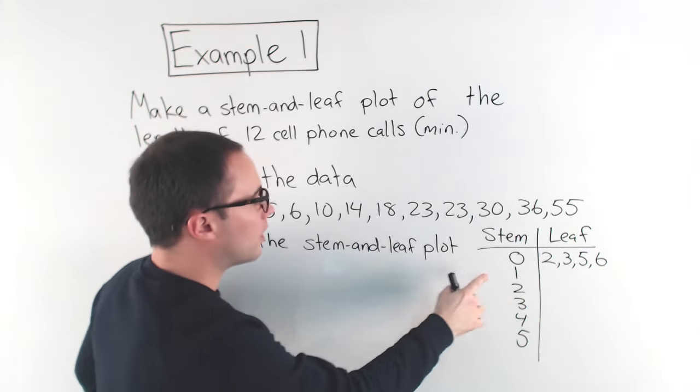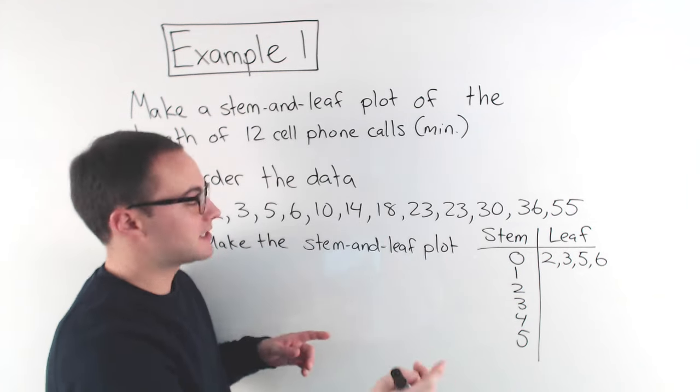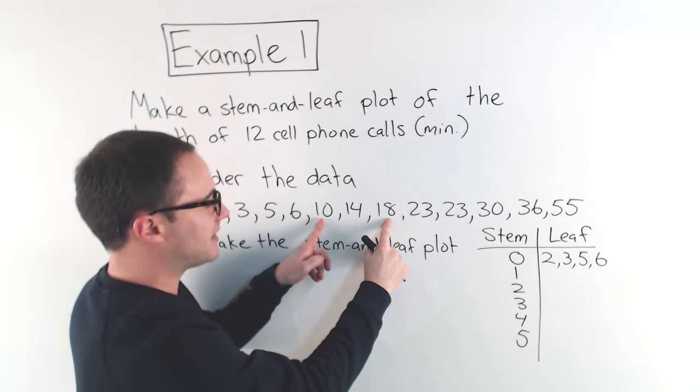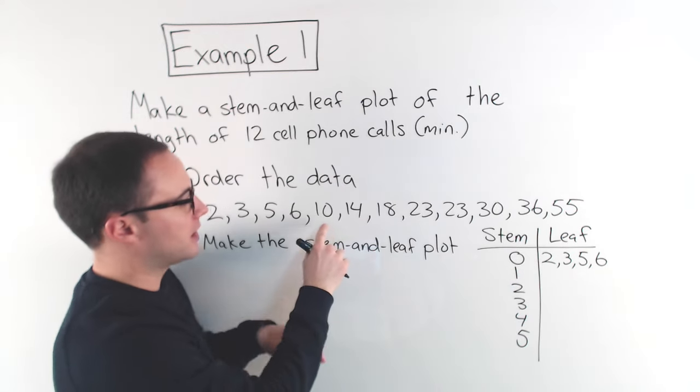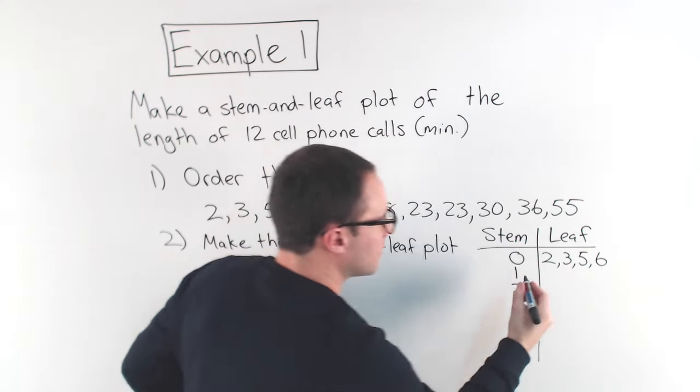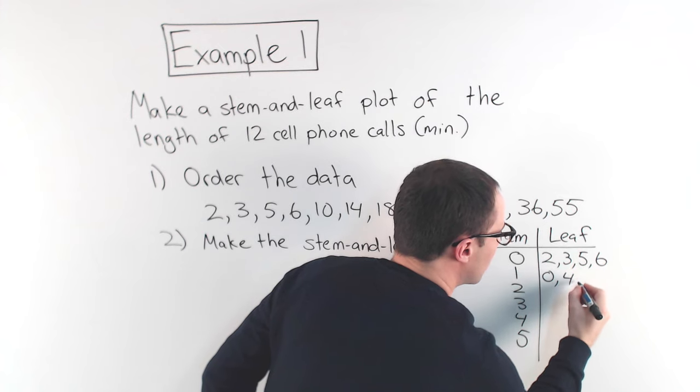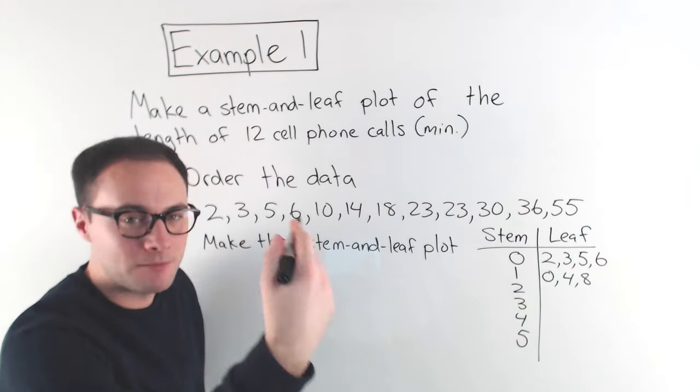Next, well, what values have a 1 in the tens place? Well, I've got the 10, 14, and the 18. So, now I'm writing the ones value here for the leaf. So, I've got 0, 4, and 8. And we keep doing that.